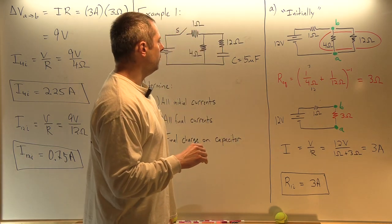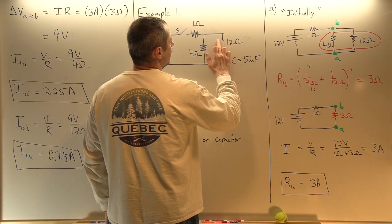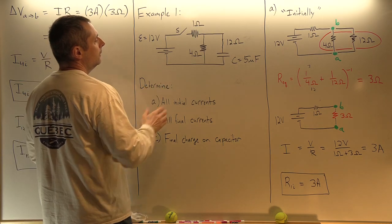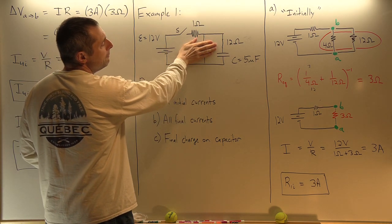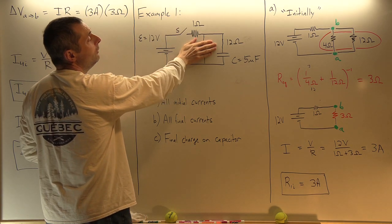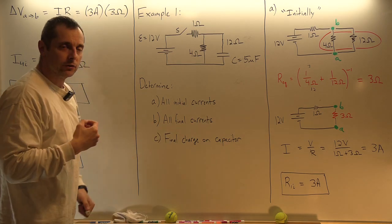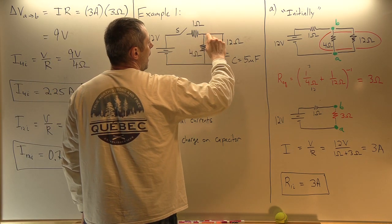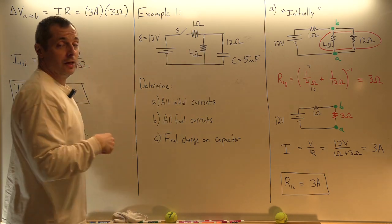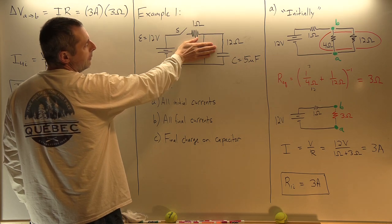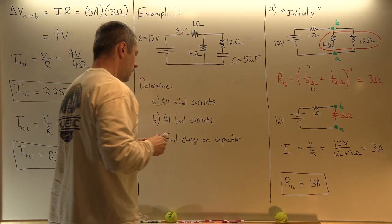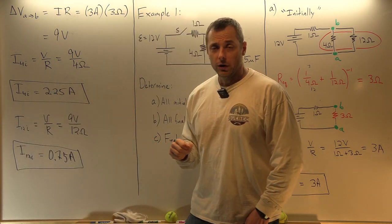Before moving on to part B, I want to mention something. If there were no resistor in series with the capacitor branch, that resistor would be completely bypassed by the capacitor. The current would just be 12 volts over 1 ohm, or 12 amps, at the beginning. The capacitor can make the current completely skip a resistor in that initial moment, because current won't go through the resistance if it can go through zero resistance instead.